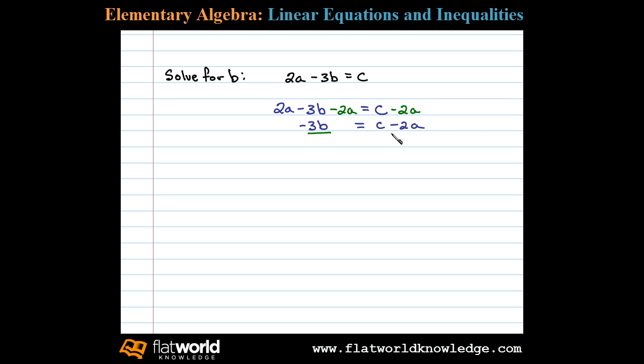If we divide by negative 3, then on the left side we'll be left with 1b. b equals c minus 2a over negative 3. Now actually here we've solved for b.